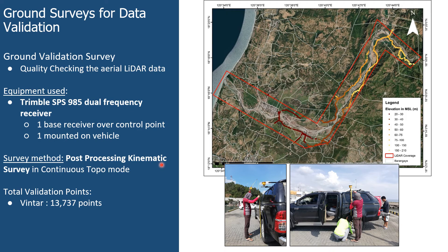Post-processing kinematic survey was done for the ground validation survey, meaning points were gathered in the field and processing was done together with data from the base station in order to apply corrections to the acquired field data. A total of 13,737 validation points were gathered to compare with aerial LiDAR data in Vintar alone.